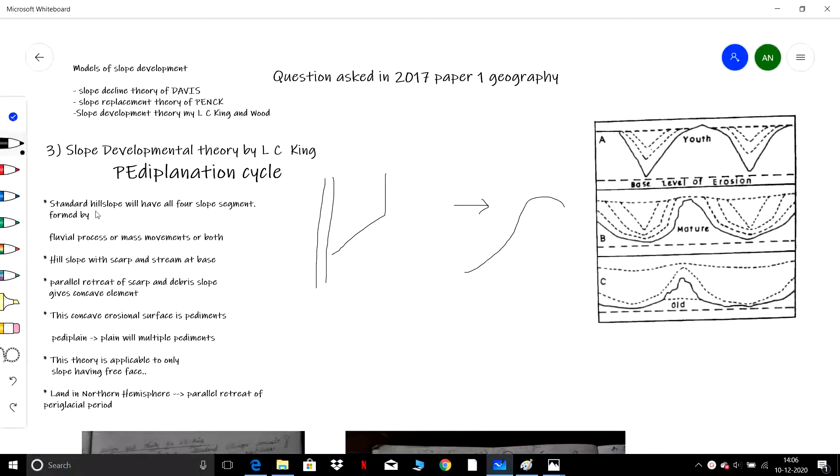According to L.C. King, a standard slope will have all four segments. What are the slope segments? The convex summit convexity, the rectilinear element, the concave element, and the free face. These are the four.